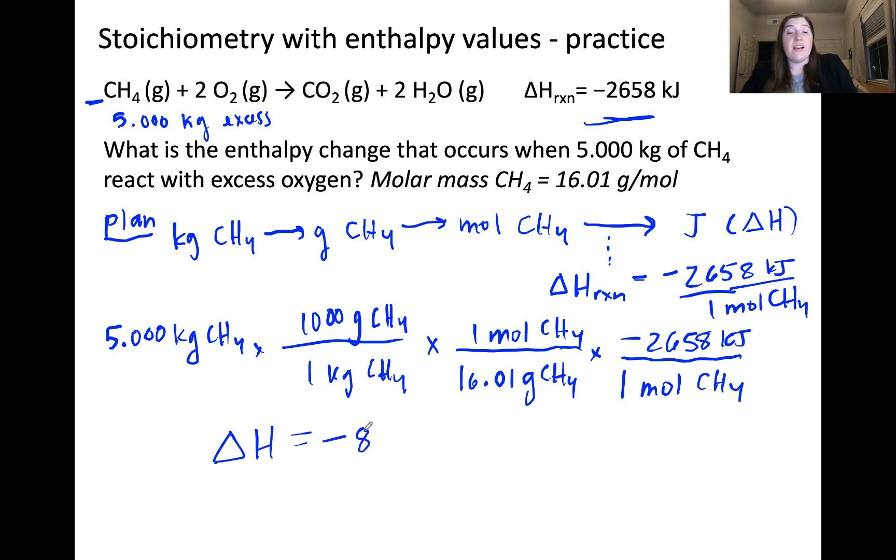When I did this calculation, I got that the enthalpy associated with 5 kilograms of methane reacting is equal to negative 830,000 kilojoules. That's a lot of energy. It makes sense because 5 kilograms of methane is much greater than one mole of methane. We know again that one mole of methane weighs 16.01 grams. So this is a reasonable answer.